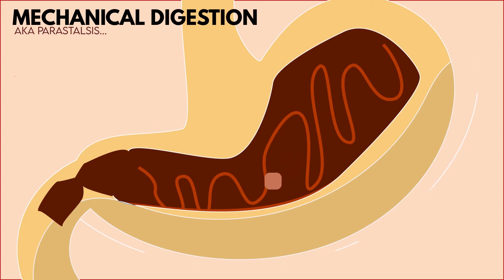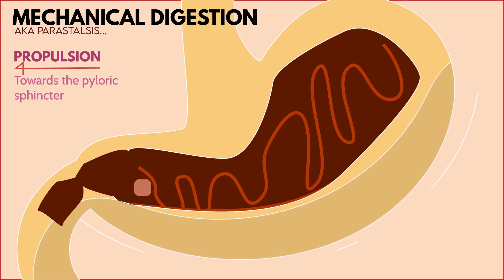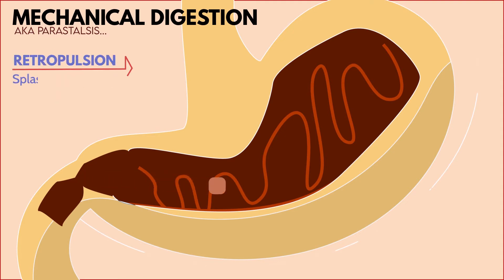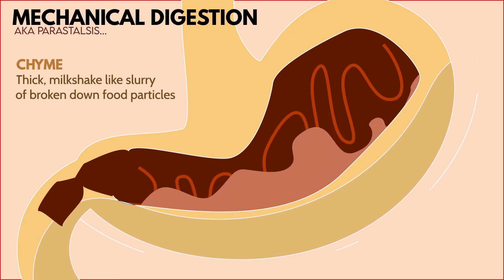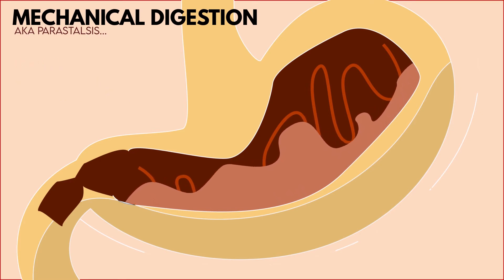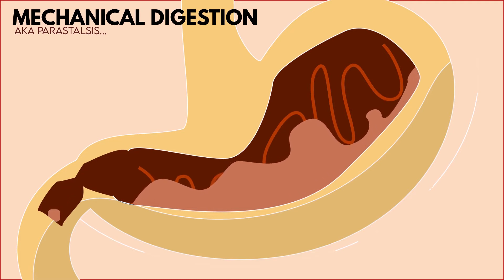Mechanical digestion in the stomach involves peristaltic movements called propulsion and retropulsion. Propulsion propels the gastric contents towards the pyloric sphincter, which is open ever so slightly to allow only the smallest contents through and into the small intestine. Retropulsion is the splashback of gastric contents that are too large to fit through the narrow opening of the pyloric sphincter. The repeating rounds of propulsion and retropulsion thoroughly mix the digesting food bolus with gastric juice, thus becoming chyme — a thick, milkshake-like slurry of broken-down food particles. Once food particles in the chyme become small enough, they pass through the pyloric sphincter into the small intestine, in a process called gastric emptying.